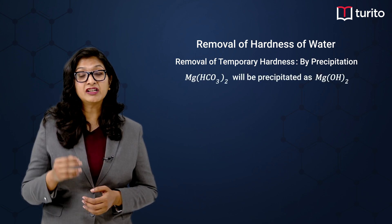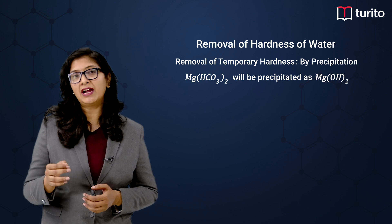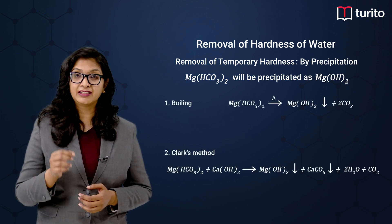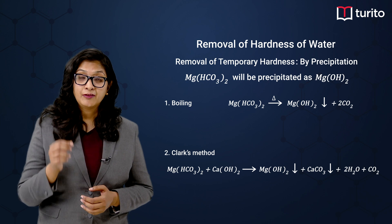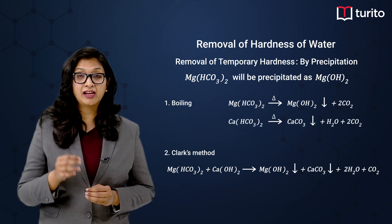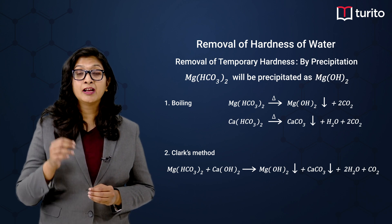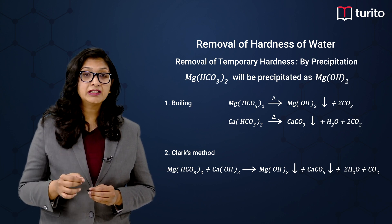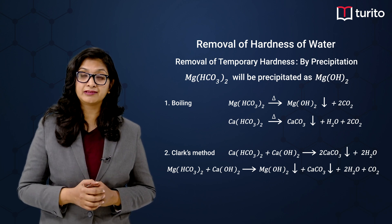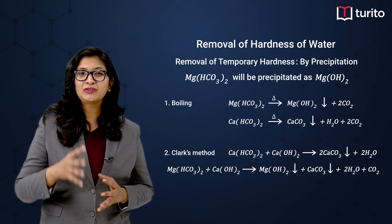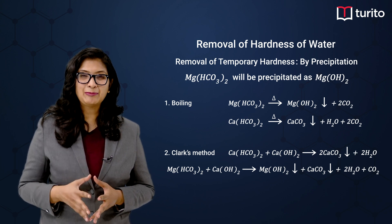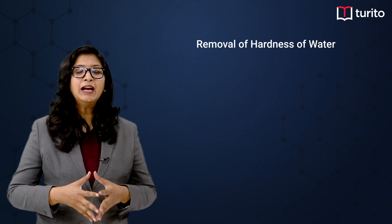This conversion happens either by boiling or by Clark's method — that means reacting with calcium hydroxide. Similarly, when taking calcium bicarbonate and boiling it or using Clark's method (heating it with calcium hydroxide), it will be converted into CaCO3.